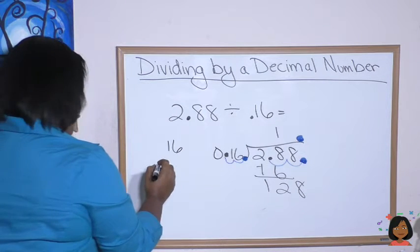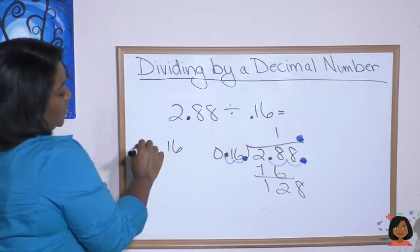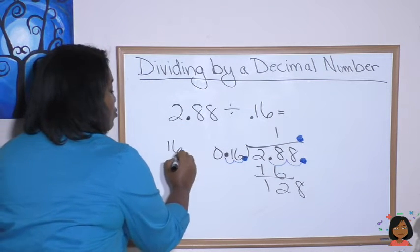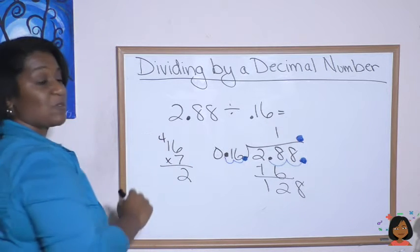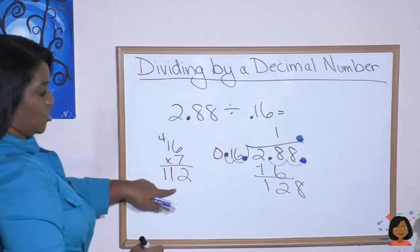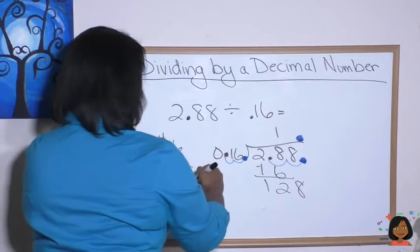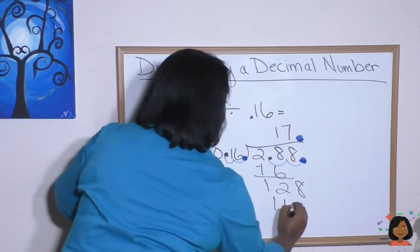7. Let me try 7. Let's just try it. I think that's going to be too much. 6 times 7 is 42. 7 times 1 is 7 and 4 is 11. I think we got pretty close. 112. Let's see if we have anything left over here. 16 times 7 gives us 112. 8. 6.